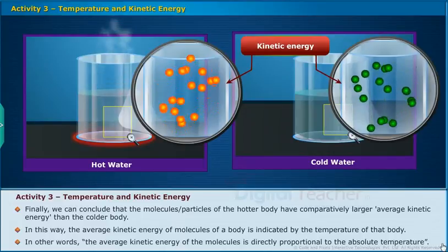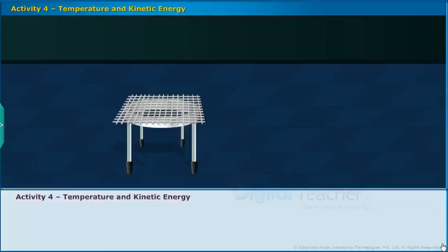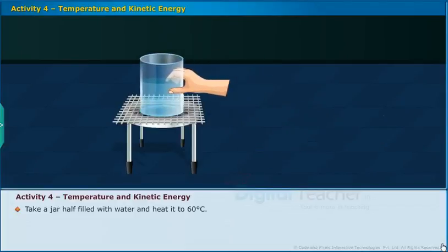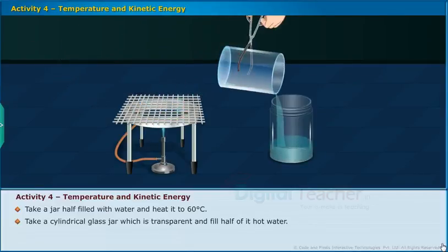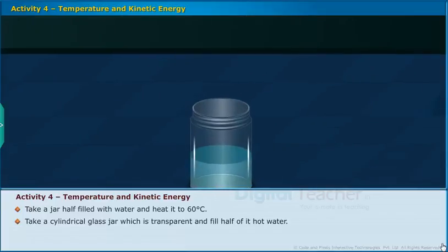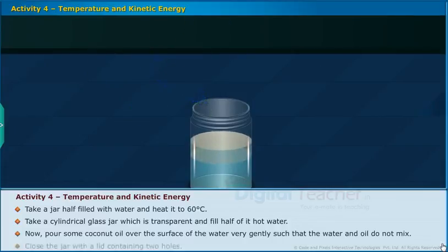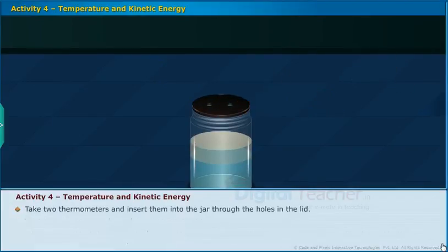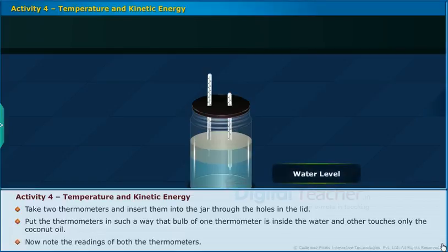Let us do another activity to learn more about the relationship between temperature and kinetic energy. Take a transparent cylindrical glass jar, fill half of it with water heated to 60 degrees Celsius. Pour some coconut oil gently over the surface of the water such that water and oil do not mix. Close the jar with a lid containing two holes. Insert two thermometers through the holes so that the bulb of one thermometer is inside the water and the other touches only the coconut oil. Note the readings of both thermometers.